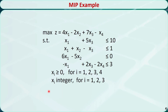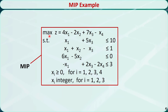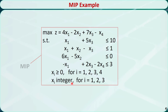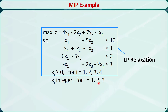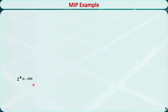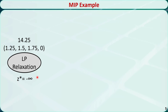Let's check this mixed integer programming example. It is a maximization problem with four variables x1 through x4. They are all required to be greater than or equal to 0. Only x1, x2, and x3 are required to be integer numbers. The linear programming relaxation is a problem without the integer restrictions. Now let's initialize z* to be negative infinity, then solve the linear programming relaxation using the simplex method. The optimal solution is x1 = 1.25, x2 = 1.5, x3 = 1.75, and x4 = 0. The z value is 14.25.